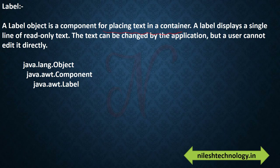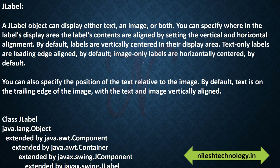Label is a component for placing text in a container. A Label displays a single line of read-only text. The text can be changed by the application but a user cannot edit it directly. So Label is used when you design a window and want to display a message or text. Similarly, JLabel is used in Swing for the same purpose. You can also use JLabel to display images such as icons or background images, and you can align the text using left or right alignment.